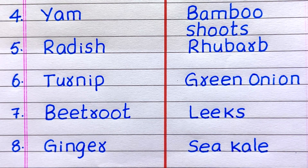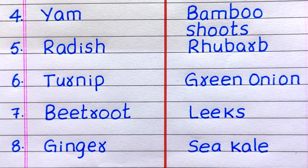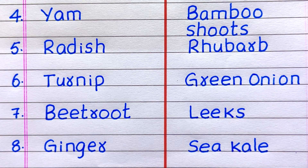Fourth example of a root vegetable is yam, fifth radish, sixth turnip, seventh beetroot, eighth ginger. Fourth example of a stem vegetable is bamboo shoots, fifth rhubarb, sixth green onion, seventh leeks, eighth sea kale.